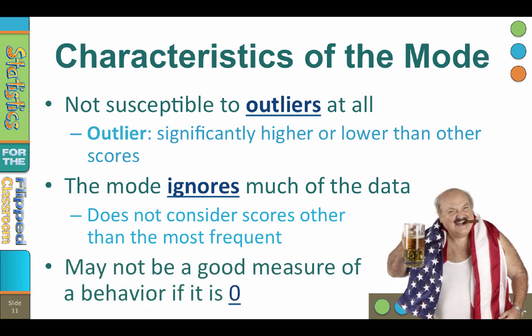Another disadvantage to the mode is that it's not terribly useful when the most common score for a behavior being measured is zero. For example, how many cigars have you smoked in the last month? There may be two people in class who have smoked a cigar, but a mode of zero doesn't tell us anything about those people of interest.